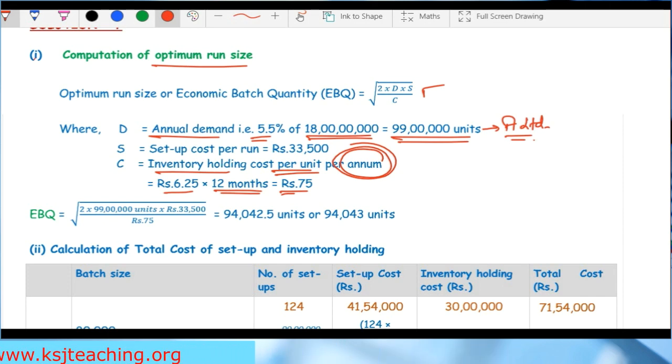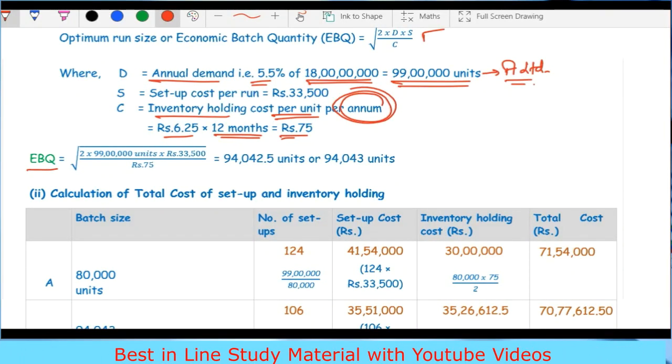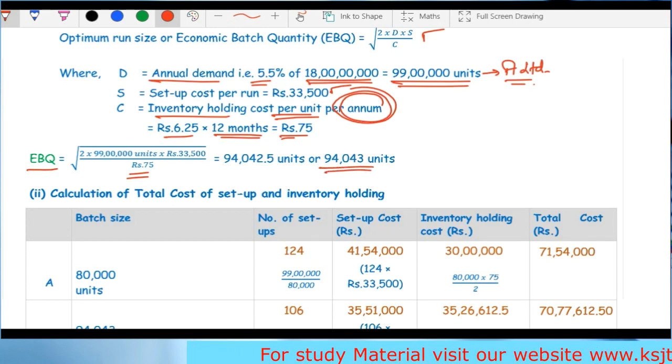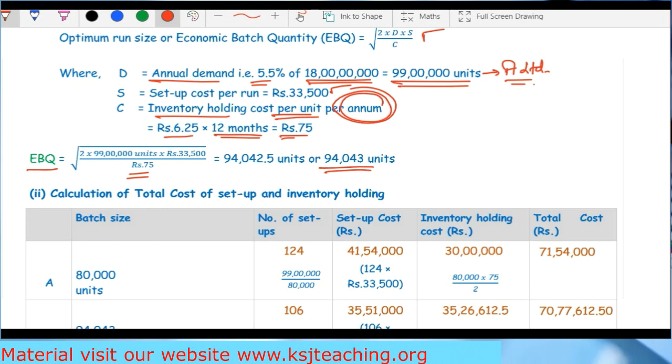Economic batch quantity equals square root of 2 times 9.9 million units times Rs 33,500 divided by Rs 75, which equals 94,043 units. You can round it off because making units in decimals is not possible. This was the first part.